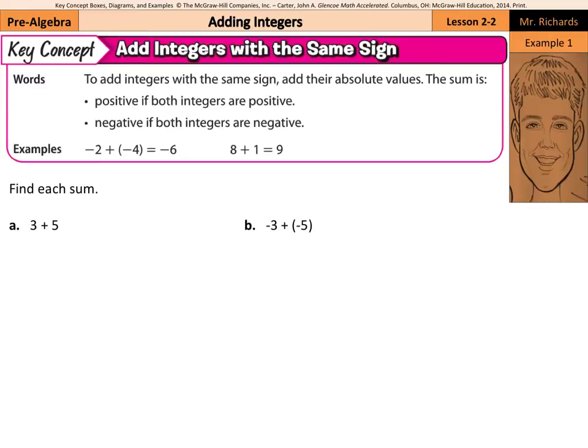If we look at example 1a, 3 plus 5 — no mystery here — 3 plus 5 is 8. And negative 3 plus negative 5: they're both negative, so this is going to be negative 8.